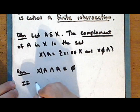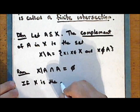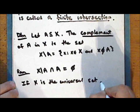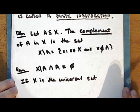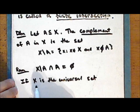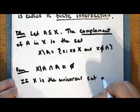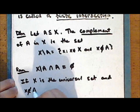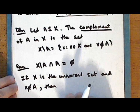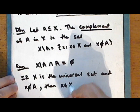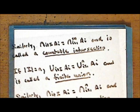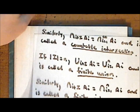Also, if the set X is the universal set — meaning every element under consideration is in the set X — then if the element x is not in the set A, it necessarily must be in the complement of A. We will end this lecture with a theorem: we will prove what is known as De Morgan's laws.